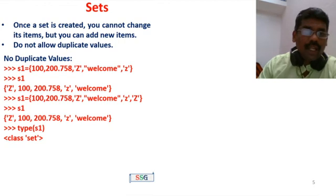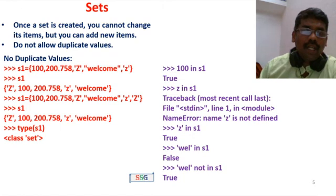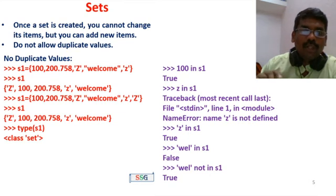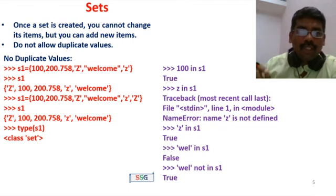Next, you can check membership. Use: 100 in S1 — this returns True. To check for 'Z' in S1, note that 'Z' must be a string input, so use single quotes. Z (without quotes) will give an error, but 'Z' in S1 returns True.